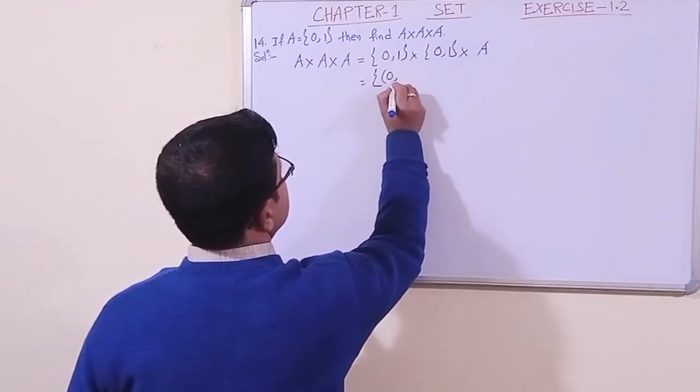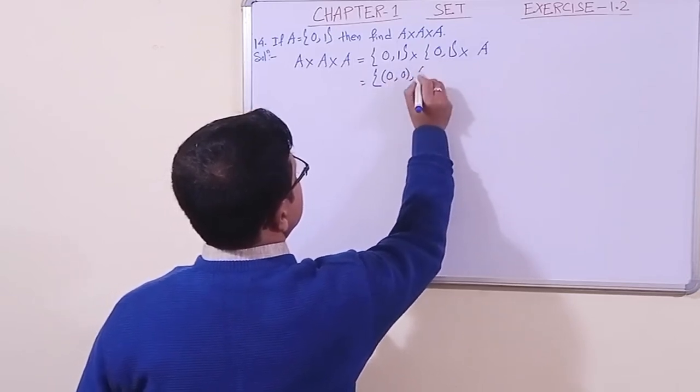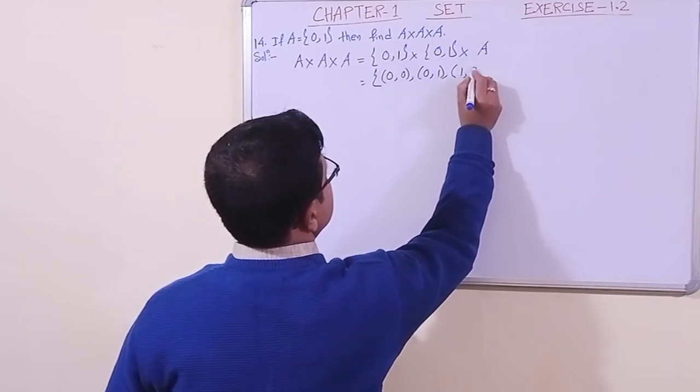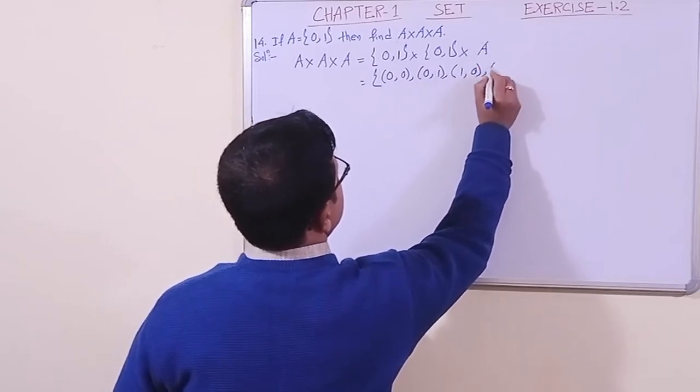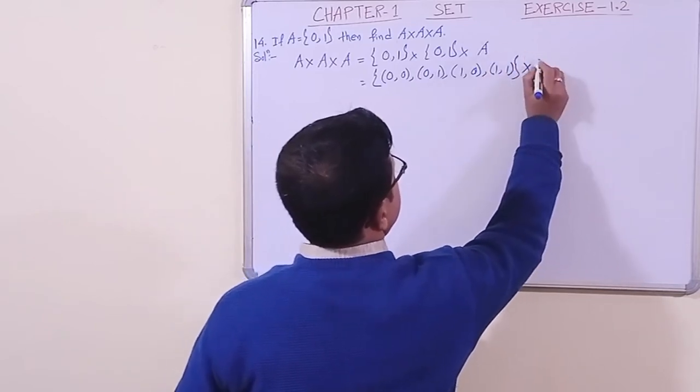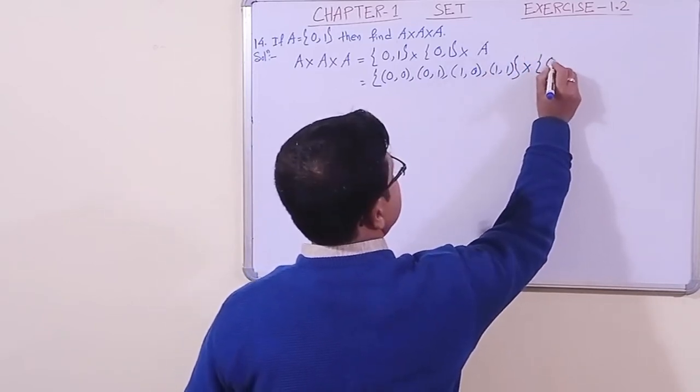In order: 0, 0, then 0, 1, then 1, 0, then 1, 1. We have A cross A. Let us write this in terms of set elements.